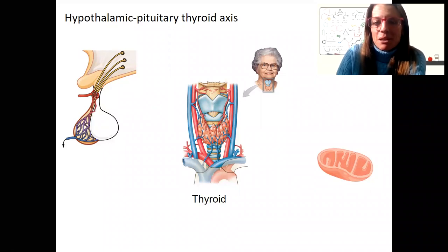Guess what? There's more hypothalamic pituitary organ axes to talk about. And the next one is the thyroid.